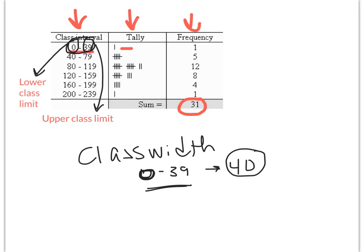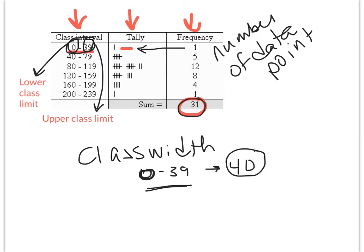Frequency is just the number of data points that fell into that class interval. And it's really just the sum of the tallies. And the sum is all the data points in which you collected. So the class width is considered to be 40.